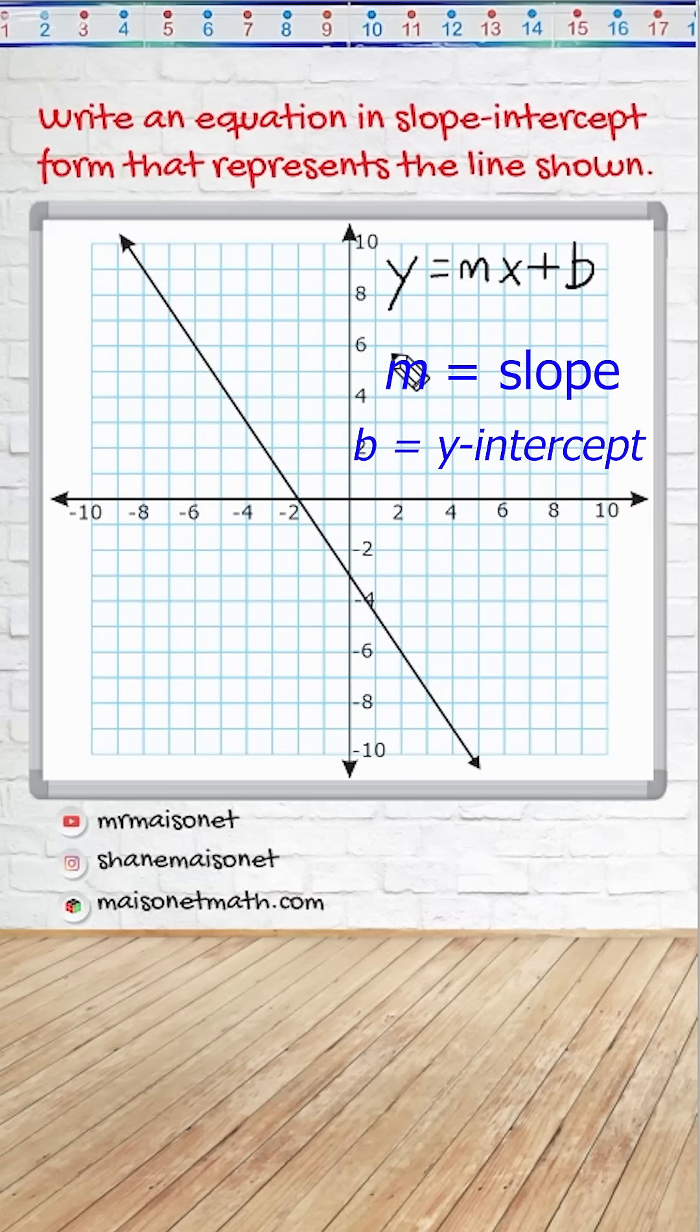So what we have to do is figure out what m is equal to and what b is equal to. We're going to start with the value of b. If we follow our line all the way until we hit the y-axis, we can see that it crosses at negative 3. So the value of b is negative 3.